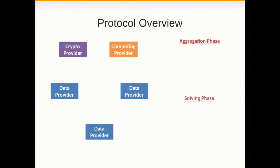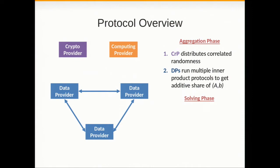The important assumption here is that the crypto provider and the computing provider are non-colluding. This is sometimes referred to in MPC as the two-server model. So this goes as follows. The crypto provider distributes some correlated randomness exactly along the lines of what you were explaining. And then the data providers engage in a bunch of inner product protocols to construct an additive share of the system that has to be solved.